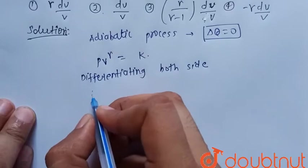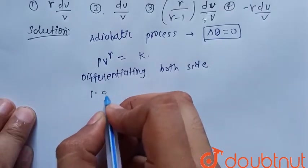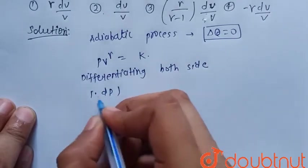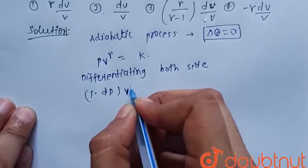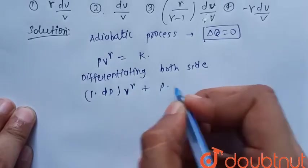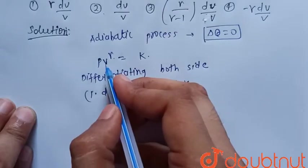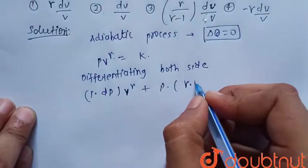That is, its differentiation will be one into dP V to the power gamma plus P into gamma, that differentiation of V to the power gamma, that is gamma into V to the power gamma minus one dV.